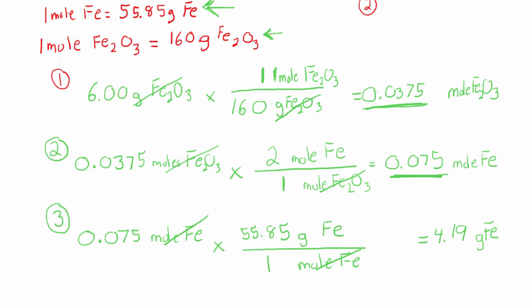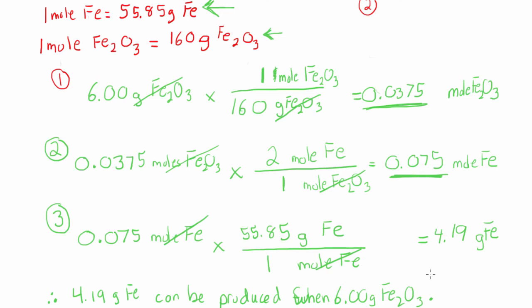Therefore, 4.19 grams of Fe can be produced when 6 grams of iron 3 oxide react according to that balanced equation. We've answered our question. It's not too difficult — once you write out your plan and your molar masses, just stick to the steps and you can get into a nice flow answering these stoichiometry problems. Well done. Miigwetch.